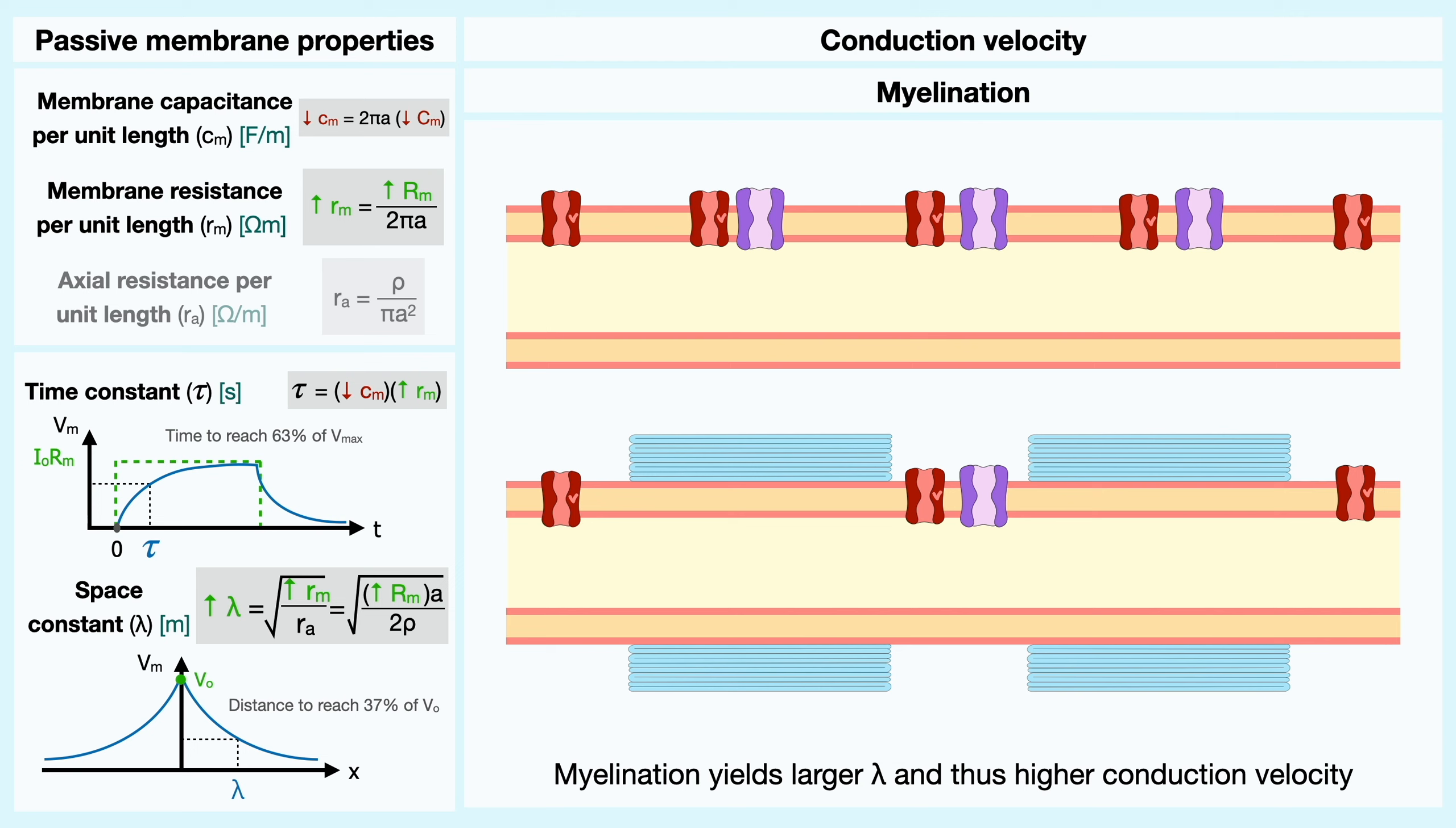The larger space constant in this scenario will produce the same effects as having a larger axon diameter. For a given depolarization, the propagation reaches further and allows to open channels at a longer distance relative to the initial injection. You can see in this schematic why nodes of Ranvier are so important.